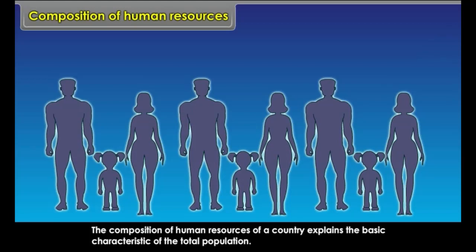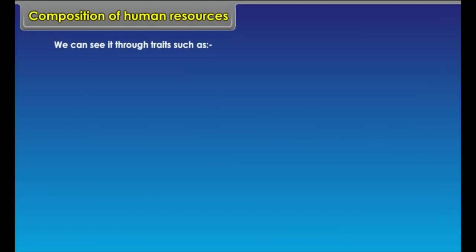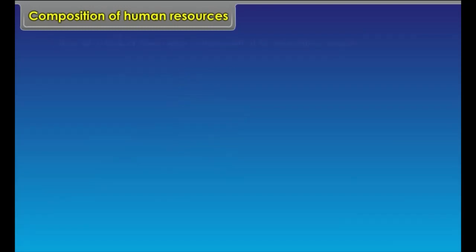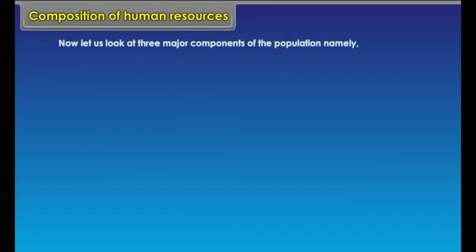Composition of Human Resources: The composition of human resources of a country explains the basic characteristics of the total population. We can see it through traits such as age, sex, literacy, occupation, tribe, language, and religion. Three major components of the population are: sex composition, age structure, and literacy levels.